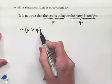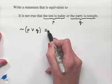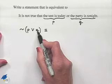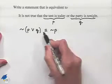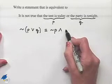To write something that's equivalent to this, we can use DeMorgan's Laws. We'll apply the negation to each statement, but we'll change the disjunction to a conjunction.